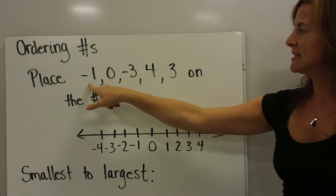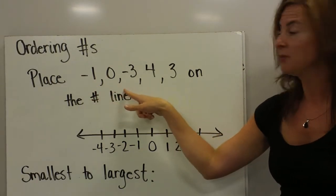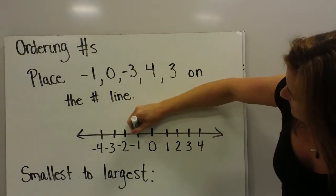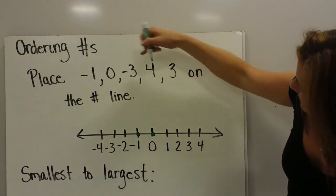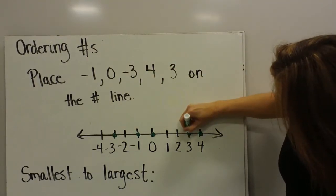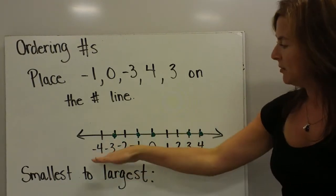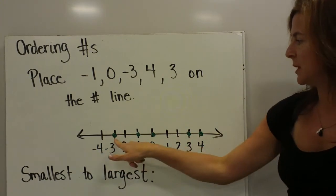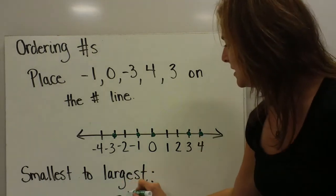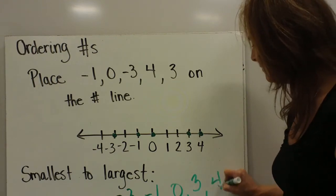Here I have an example that says: place these numbers on the number line — negative 1, 0, negative 3, 4, and 3. Plotting these on the number line, I can see the order of these digits from smallest to largest. Remember that as numbers go to the right they get larger, so starting with my first plotted point, I can list these numbers from smallest to largest: negative 3, negative 1, 0, 3, and 4.